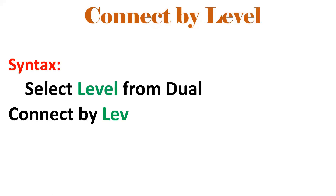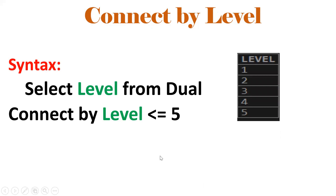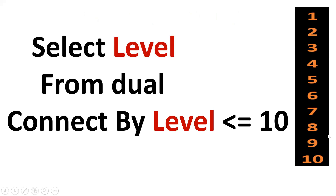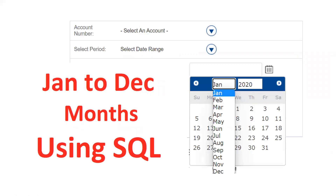CONNECT BY LEVEL is very, very important. The syntax is: SELECT LEVEL FROM DUAL CONNECT BY LEVEL <= 5 — it will print numbers 1 to 5. In SQL, if you want to loop N number of times, you use CONNECT BY LEVEL. If I want 1 to 10, I put CONNECT BY LEVEL <= 10. For 1 to 100, I put <= 100. From an interview perspective, this concept is very, very useful.